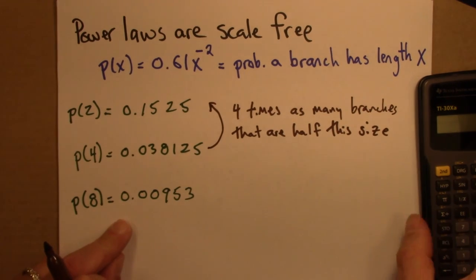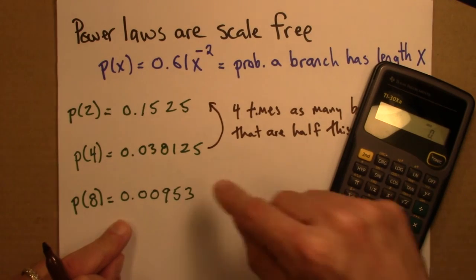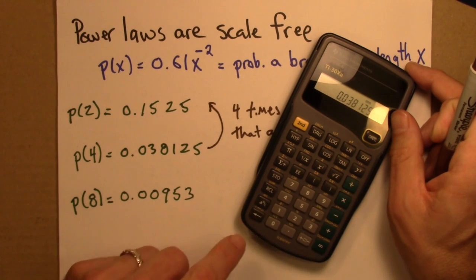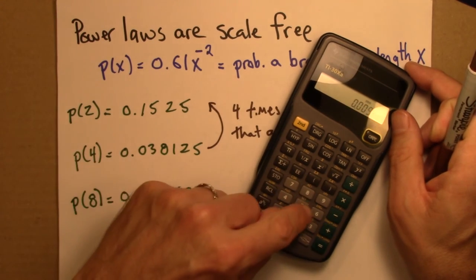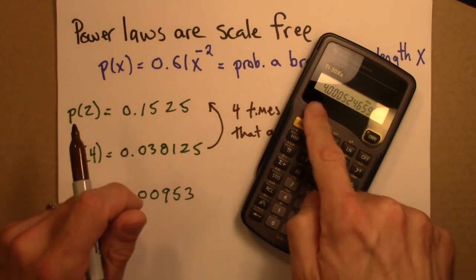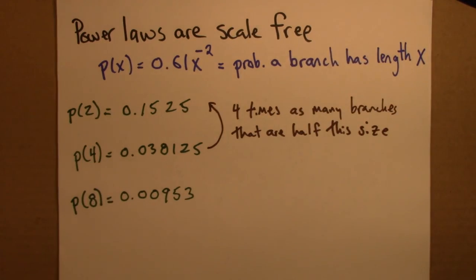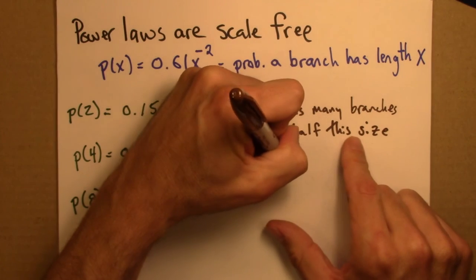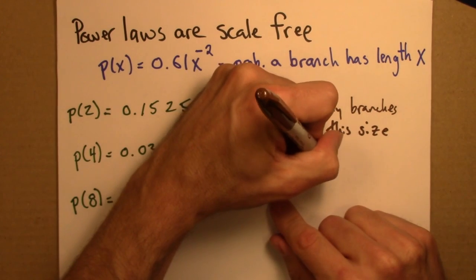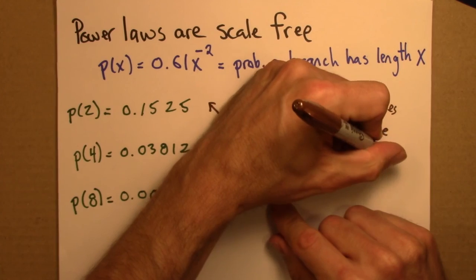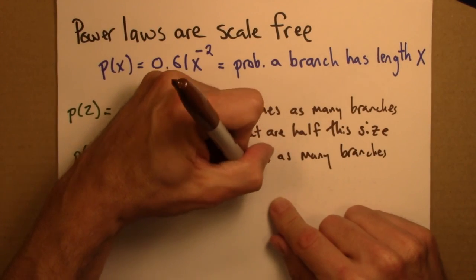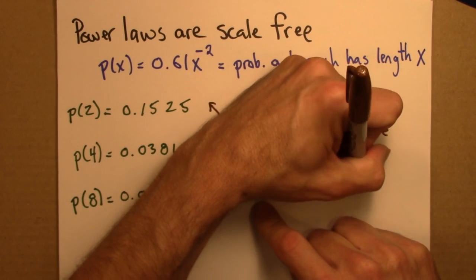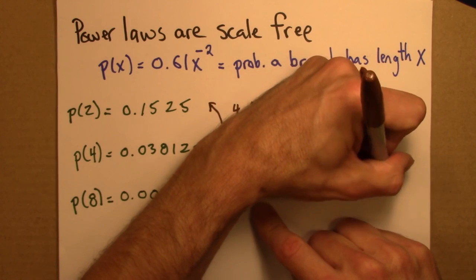Alright, now let's think about going from here to here. So again, I'm going to take this, divide it by that. 0.038125 divided by 0.00953, and I get 4.0005, so essentially 4. So that means that the same thing holds. There are 4 times as many branches that are half of this size.